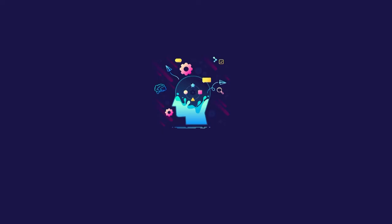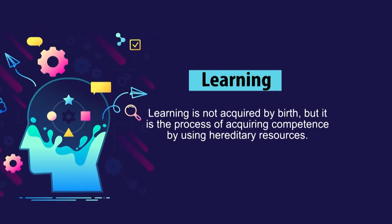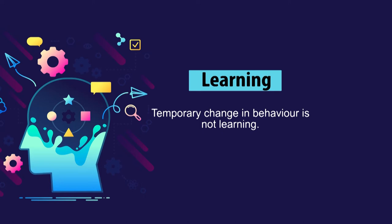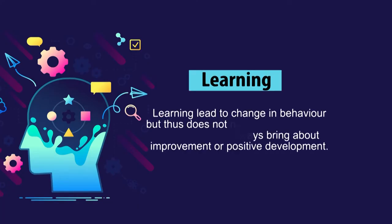Analyzing the above definitions, we find that learning is not acquired by birth but is the process of acquiring competence by using hereditary resources, as Hurlock said. Second, temporary change in behavior is not learning — a permanent change must be visible to be considered learning. Also, learning leads to change in behavior but does not necessarily mean these changes always bring improvement or positive development, as Woodward explained.